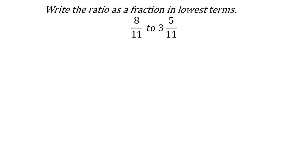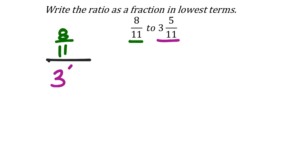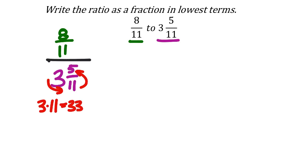Now what do we do with ratios that have fractions inside? You can write it as a complex fraction — a fraction inside a fraction. The first value, 8 over 11, is our numerator, and three and five-elevenths is our denominator.